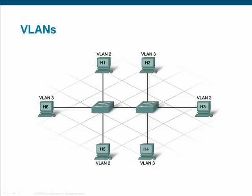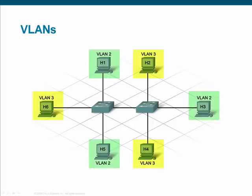A VLAN allows a network administrator to create logical groups of network devices that act as if they are on their own independent network, even if they share a common infrastructure with other VLANs. This means that a networker can logically configure a single, physical switch to act as if it is multiple and separate logical switches. Moreover, multiple switches configured with similar VLANs can be interconnected, and devices on the same VLAN can communicate with each other across those switches.